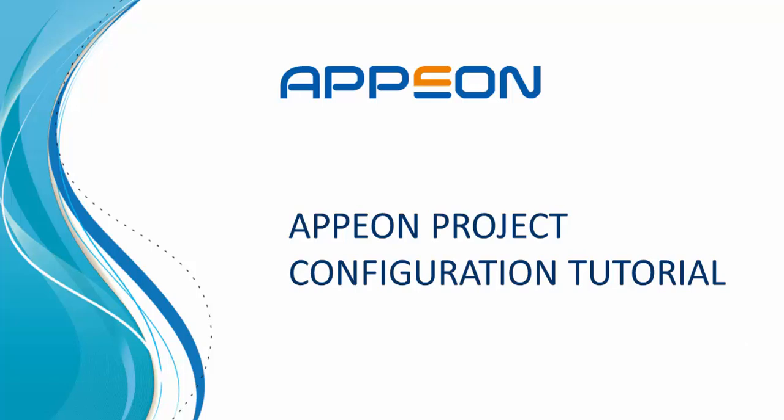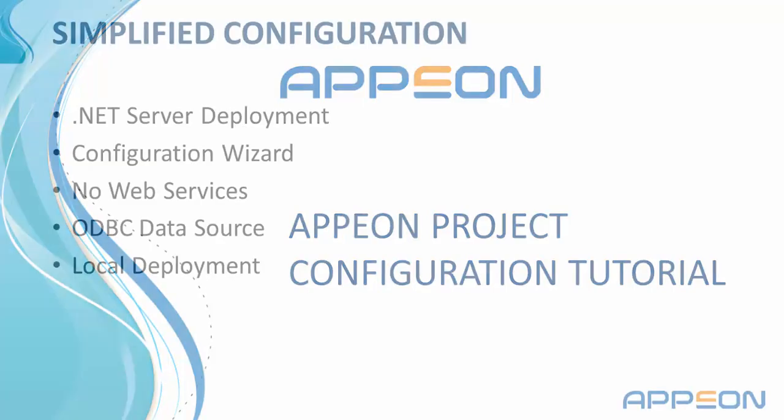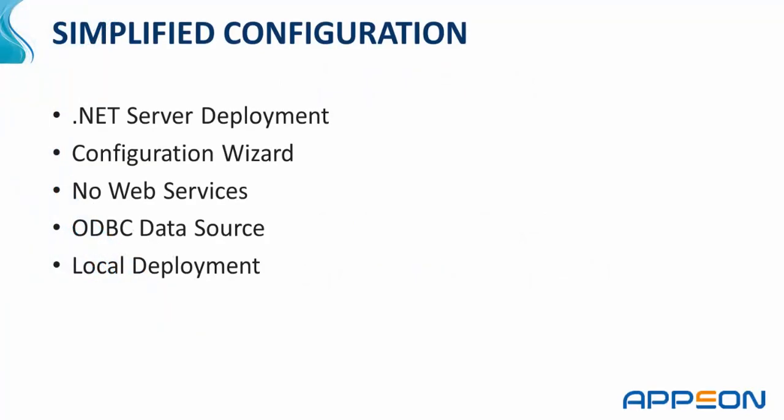In this tutorial, we will look at how to configure an Appian web or mobile project. We will look at one simplified configuration. There are many different scenarios which would affect how you configure your project, but in this particular example, we will be deploying to a .NET server, which is Microsoft IIS. We have a simple application and can use the configuration wizard instead of doing a manual configuration. The application does not use any web services. It's a database-driven application that connects to an ODBC data source, and we will configure our application for deployment to a local server on the same Windows computer as the PowerBuilder IDE.